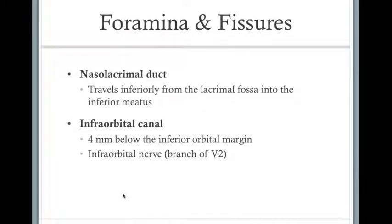The nasolacrimal duct travels inferiorly from the lacrimal fossa into the inferior meatus. The infraorbital canal is located 4 millimeters below the inferior orbital margin, and it transmits the infraorbital nerve, which is a branch of V2. Right here we have the nasolacrimal fossa, and the nasolacrimal canal just goes down from here into the inferior meatus.